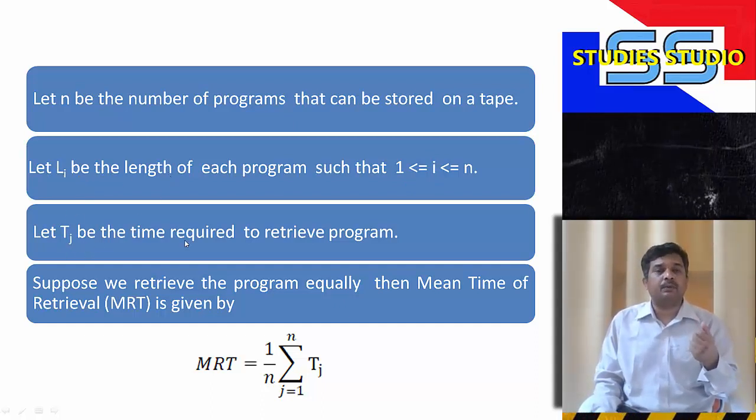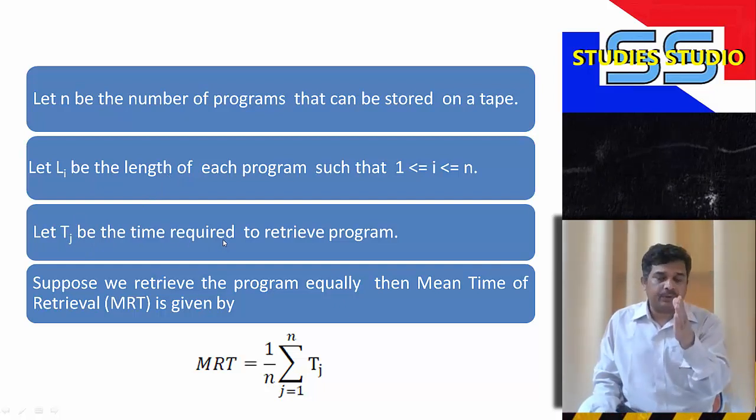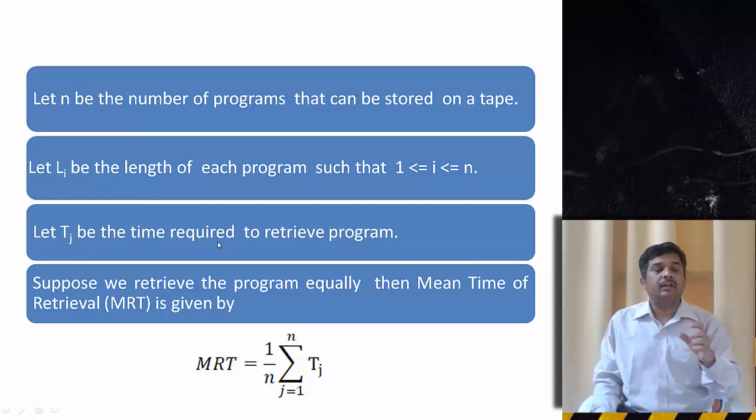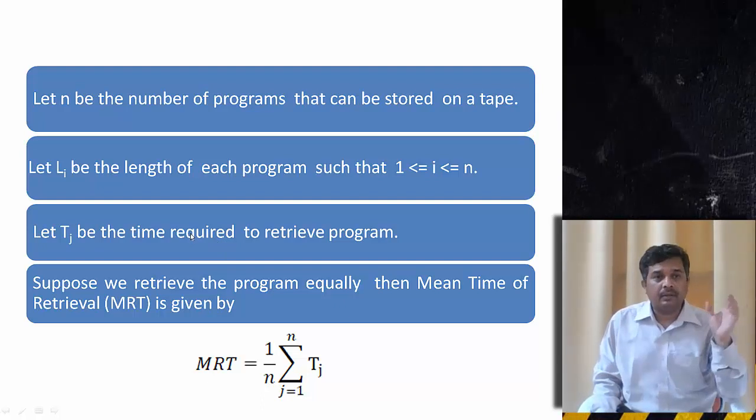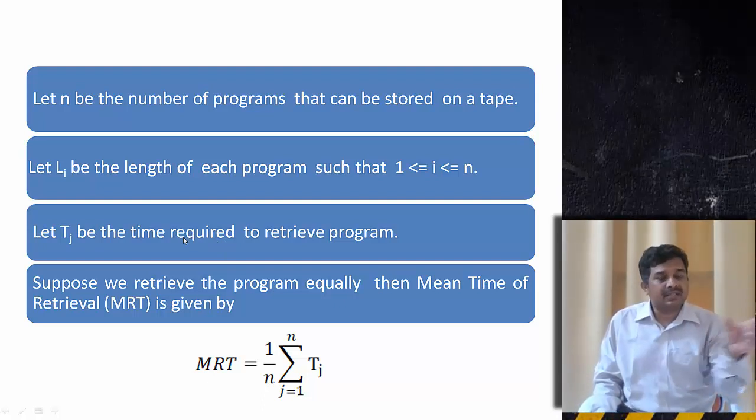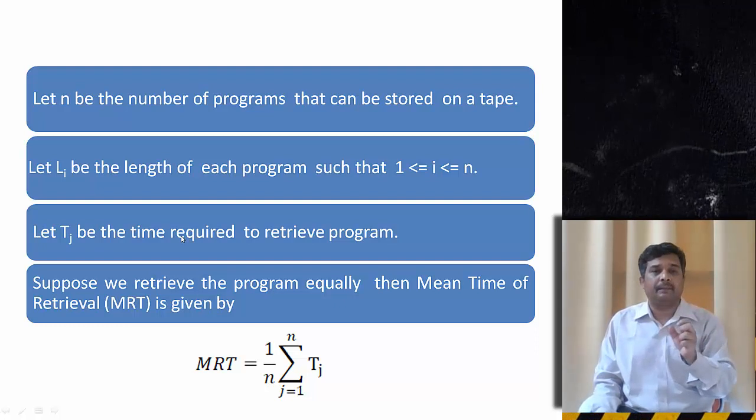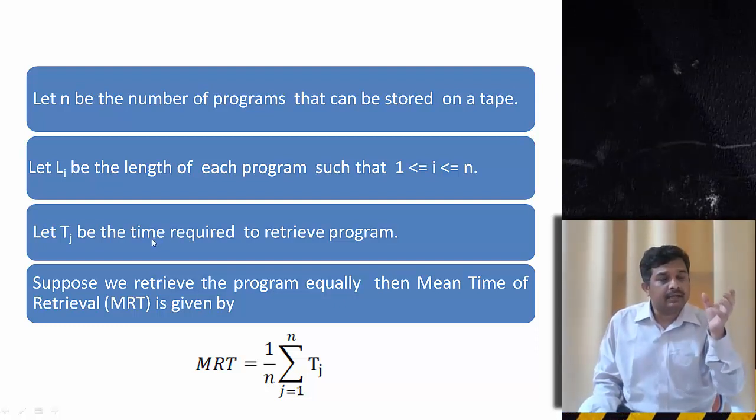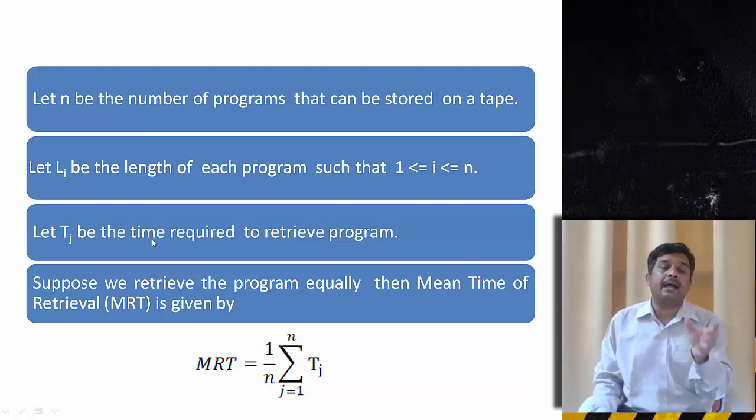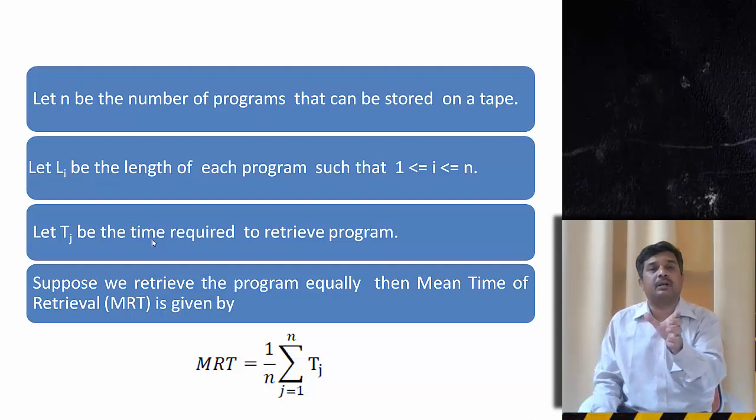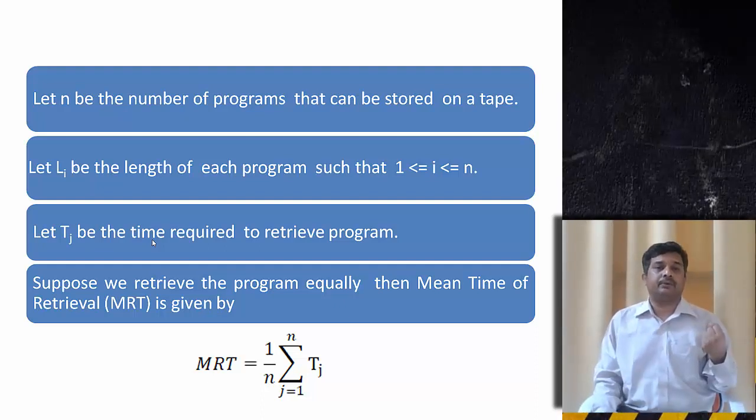To retrieve that particular program, let us say second program, if you want to retrieve then of course you have to skip the first program. So to skip the first program you need some time. You need time to skip the first program and you need to read the second program in order to retrieve the second program.